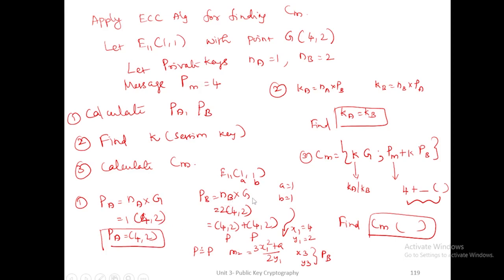And pb means nb into g. So nb is 2, g is (4,2), the base point value. So 2 of (4,2) means what? If r = 2p, we write it as p + p. By applying the same formula, 2p can be written as p + p. So (4,2) + (4,2). I already gave the explanation for addition operations of two points. If two points are equal, for finding the slope value m, the formula is m = (3x1^2 + a)/(2y1).